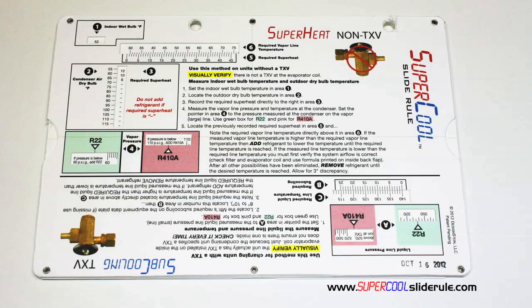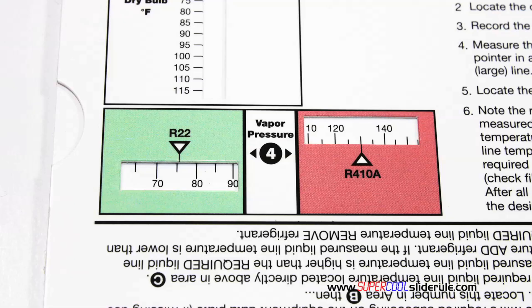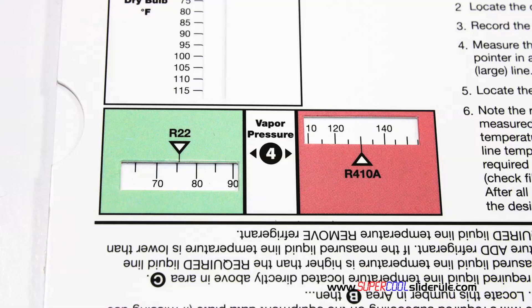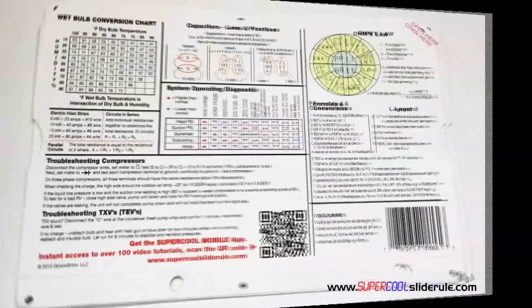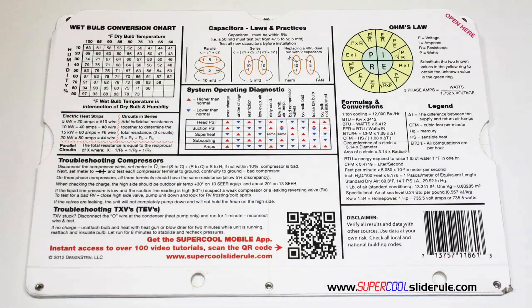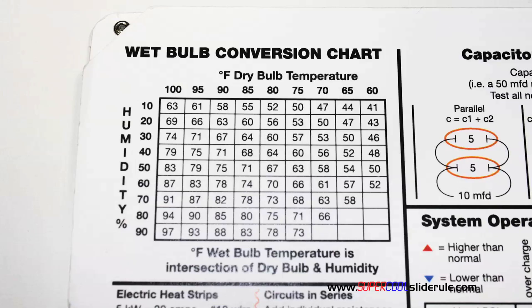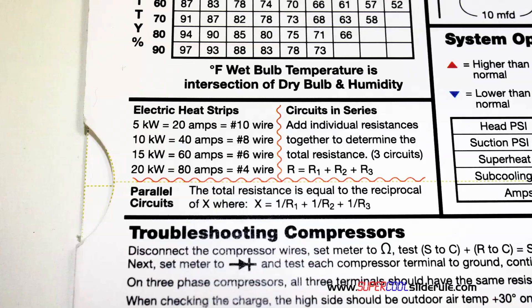Thankfully, those days are gone. This one tool will allow you to charge a system with R22 or R410A in either the superheat or subcooling method. The back cover contains required formulas, capacitor rules and practices, a wet bulb conversion chart, and how to perform computations on series or parallel circuits.